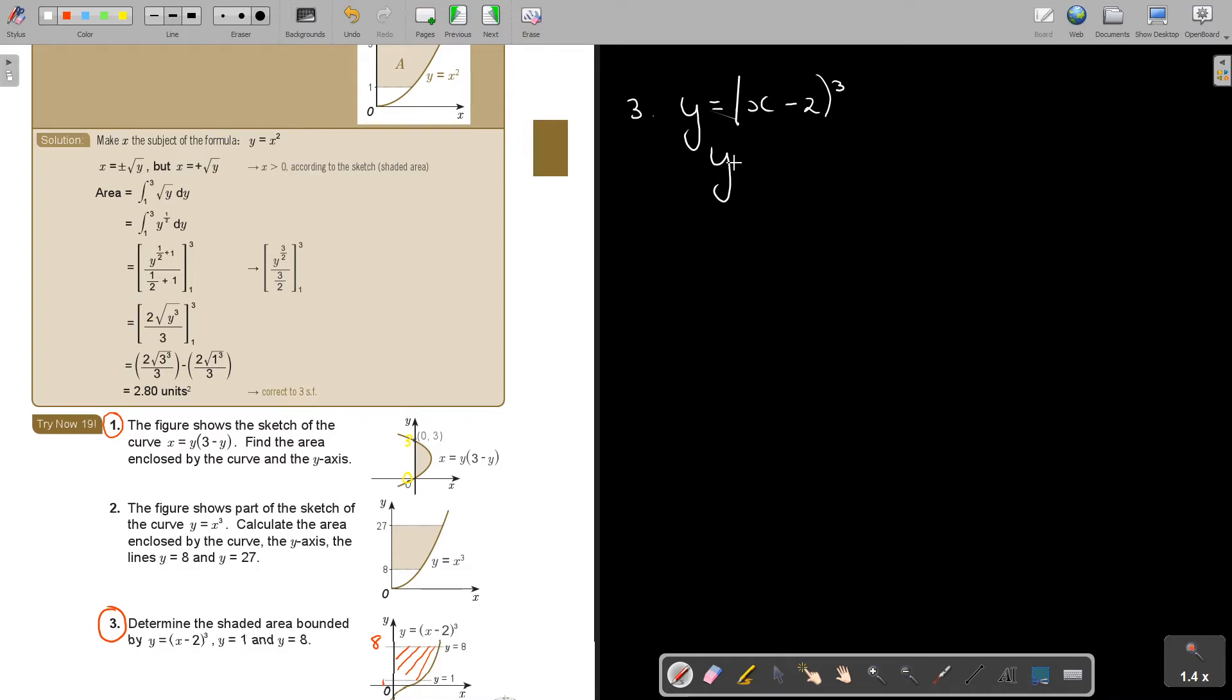So it's going to be x. Can you see? And okay, to get rid of that, I take the cube root, and I take the cube root. So it's the cube root of y, and that is x minus 2.